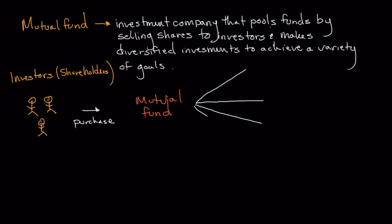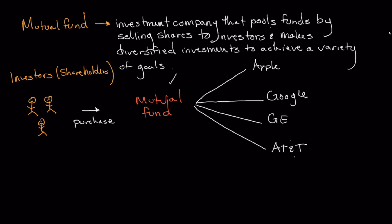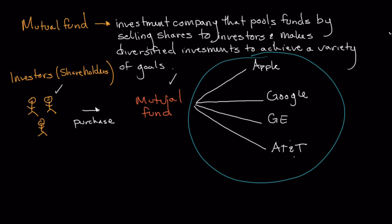By acquiring one mutual fund, you get exposure to a lot of different types of securities. For example, if this were a broad S&P 500 index mutual fund, it might get you exposure to Apple, Google, General Electric, and AT&T. Many mutual funds hold hundreds of different shares across all different types of asset classes and market capitalizations, so by acquiring this one mutual fund, investors get exposure to all of these different investments with just one purchase.